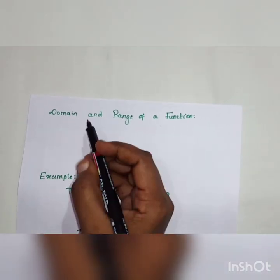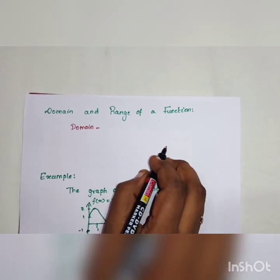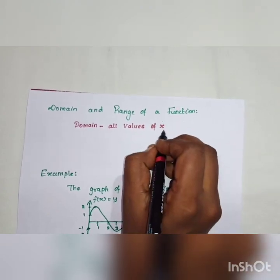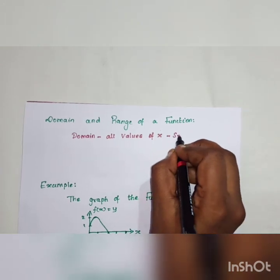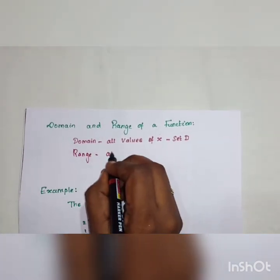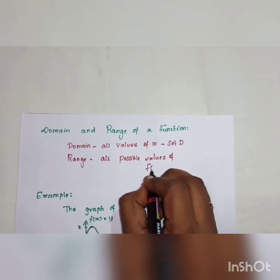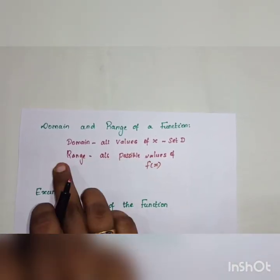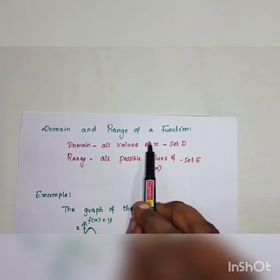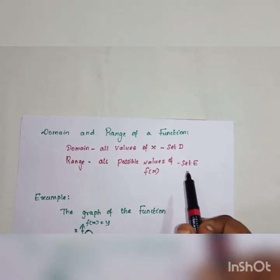The next topic is domain and range of a function. The domain is all possible x values — all the x values for which the function is defined belong to the domain. The range is the set of all f(x) values.